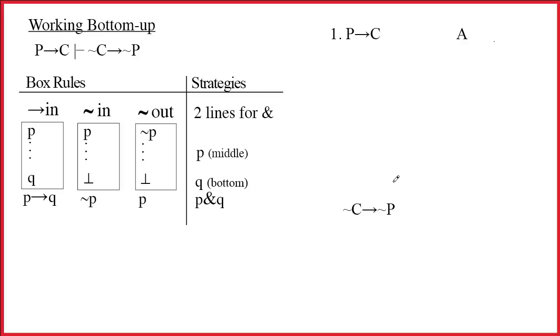So let's do the proof. Well we always start proofs at the top and do whatever we can. Obviously all we have is this one boring conditional, so there is nothing that we can do at the top. If we had P on another line we could do arrow out, but we don't, and so there really is nothing to be done at the top.